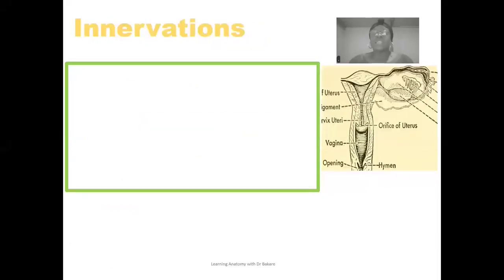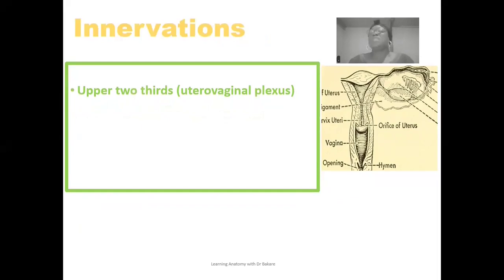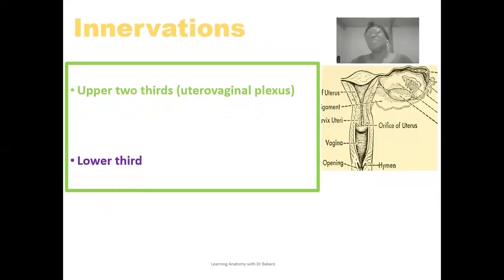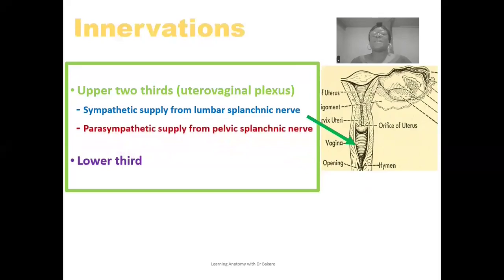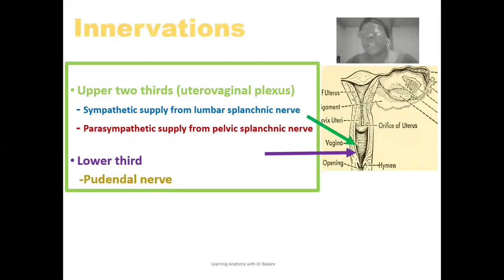The innervation is different between the upper two-thirds and the lower one-third. The upper two-thirds are innervated through the uterovaginal plexus; through this plexus, sympathetic supply is from the lumbar splanchnic nerves, while parasympathetic supply is from the pelvic splanchnic nerves. The lower one-third is innervated by the pudendal nerve.